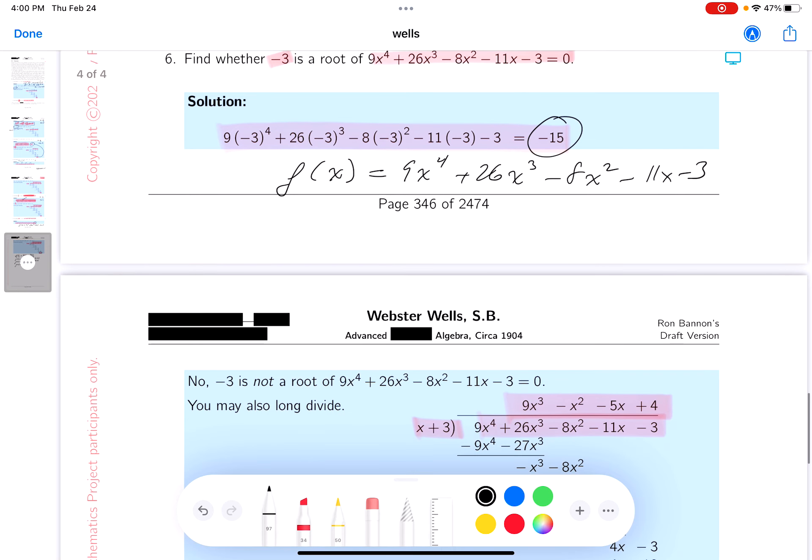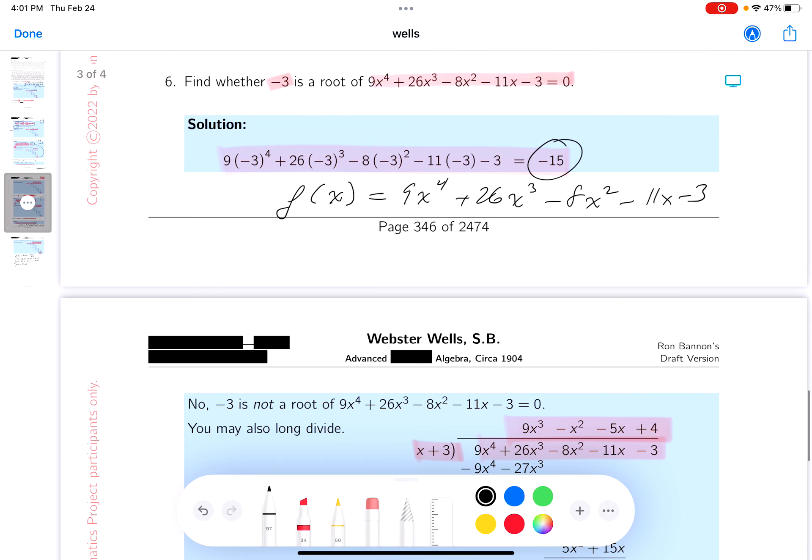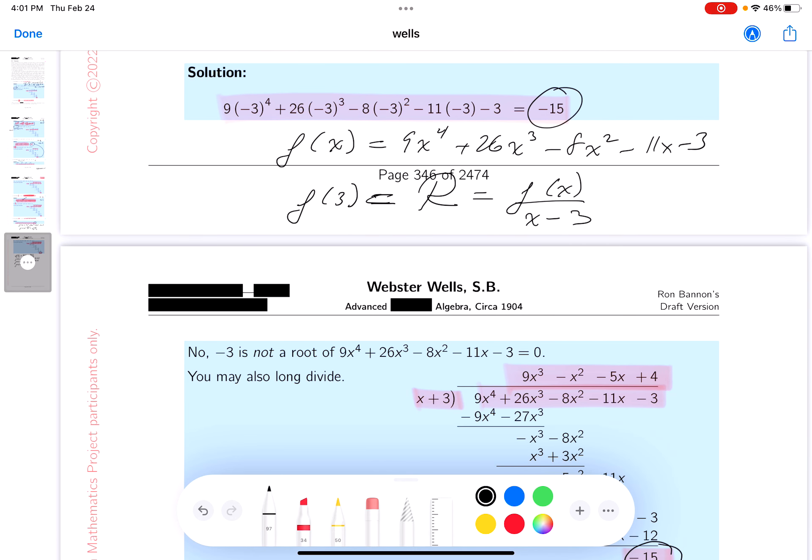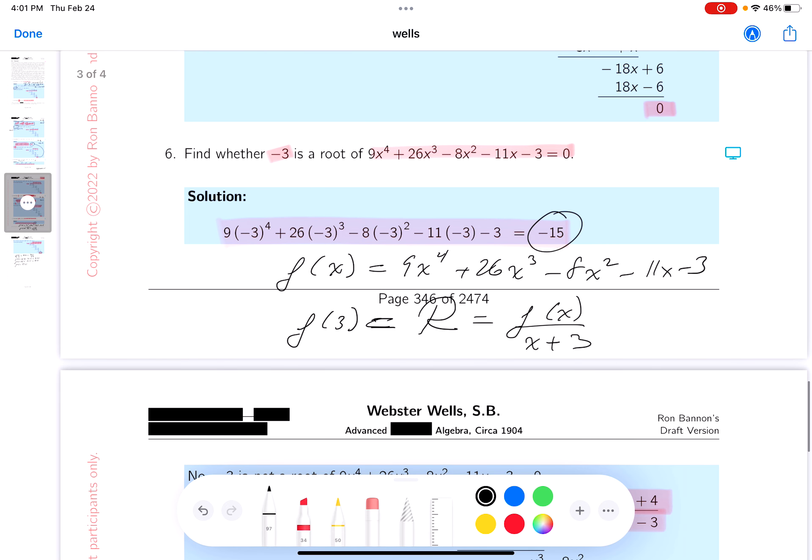So the bottom line is, f(-3) is just the remainder when you divide f(x) by x-(-3), and that's all we did over here. I'm sorry, x+3 in this case. Sorry about that, I made a mistake there.